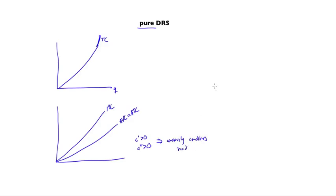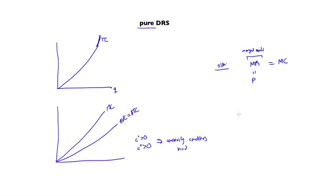That means the solution is given by the first-order condition: marginal revenue equals marginal cost. Marginal revenue is just p — every unit of q gives us revenue of p. So what does that mean? The solution is given by: at any price, the quantity q that makes the marginal cost equal to p.